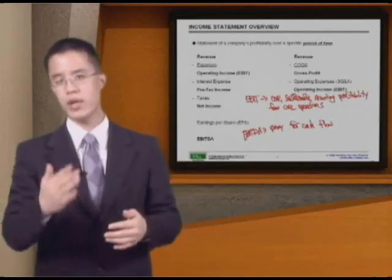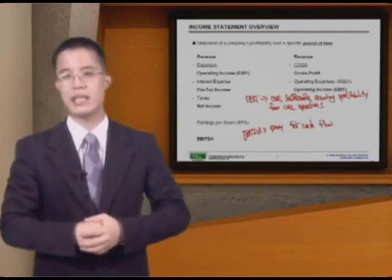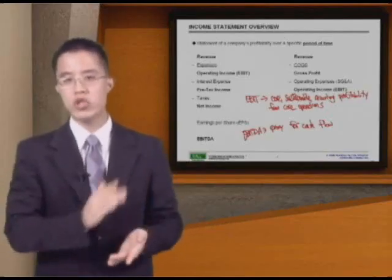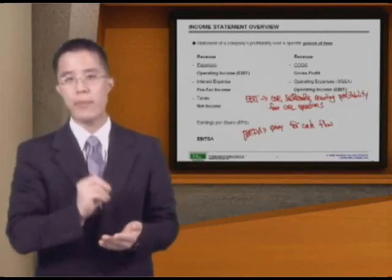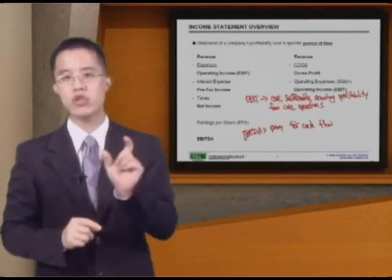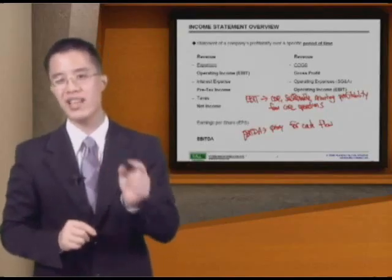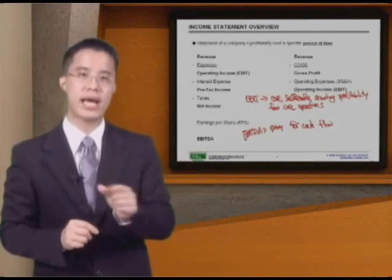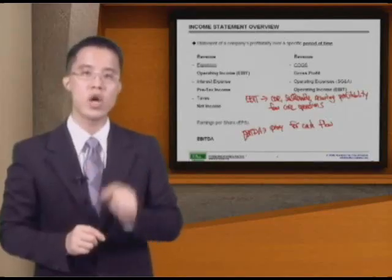Now we come to the term EBITDA. We start with EBIT — Operating Income, Earnings Before Interest and Taxes — and we add the two largest non-cash expenses: depreciation and amortization.